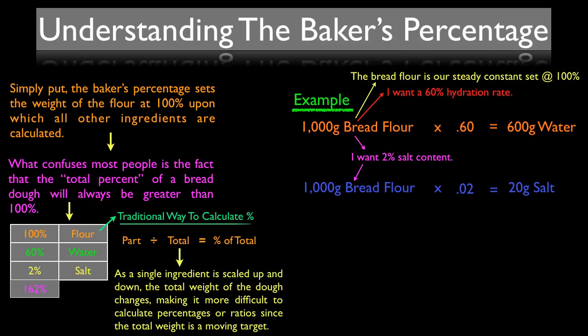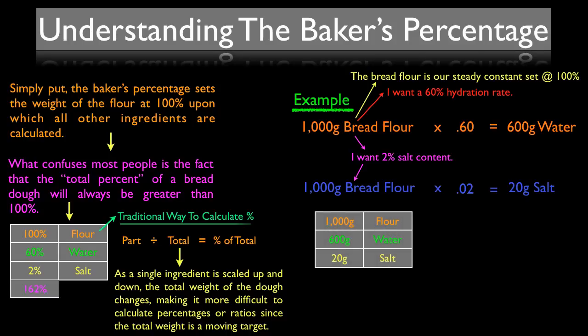This calculation can be expressed in a basic bread dough recipe of 1,000 grams flour, 600 grams water, and 20 grams salt.